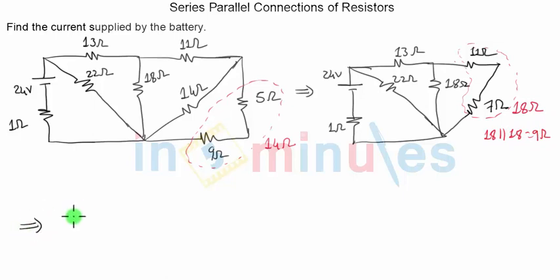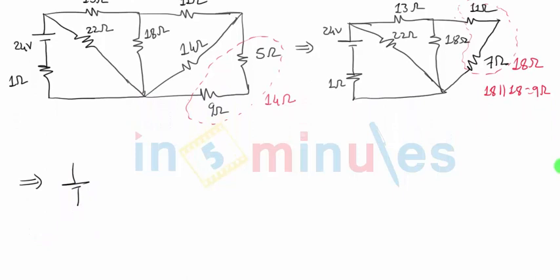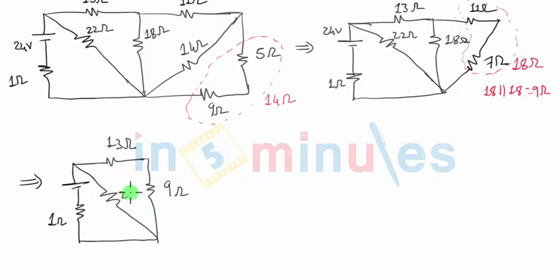This is my battery of 24 volts and the original resistance of 1 ohm here, 13 ohms as it is. This 18 combined with this 18 gives me 9, so I will just show one resistance here that is of 9 ohm and this is 22 ohms.